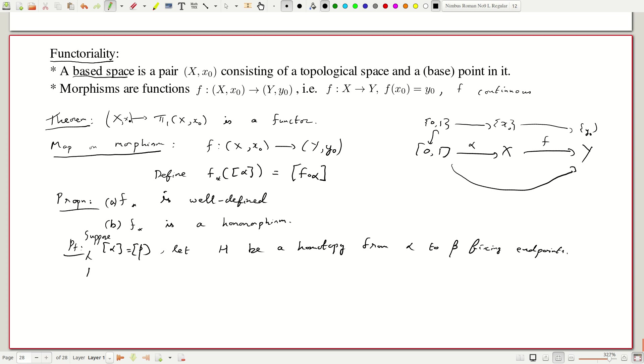Then, we did this once with the covering map. Then, let us look at f composed with h. This map is [0,1] cross [0,1] to Y. This is a homotopy from f of α to f of β.